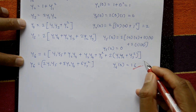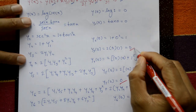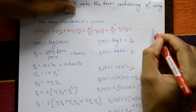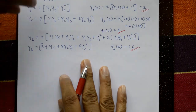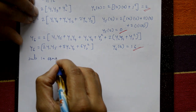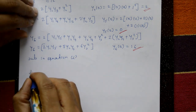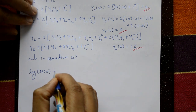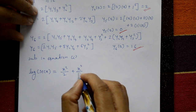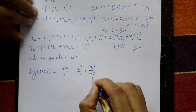Now substitute all values y(0)=0, y1(0)=0, y2(0)=1, y3(0)=0, y4(0)=2, y5(0)=0, y6(0)=16 into equation 1 (the Maclaurin series). The result is: log(sec x) = x²/2 + x⁴/12 + x⁶/45. This is the required answer.